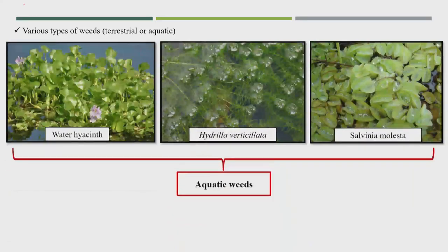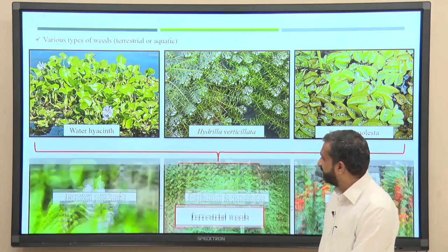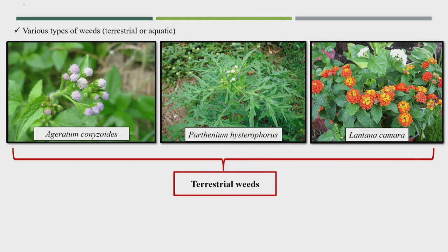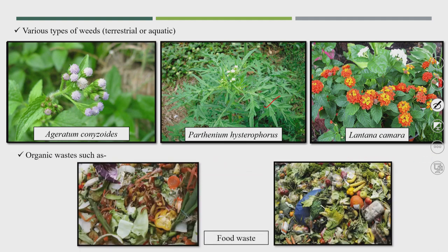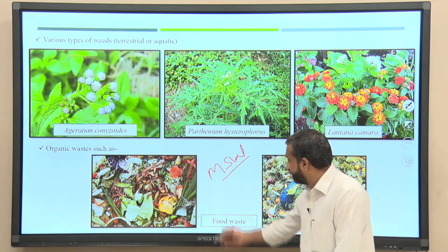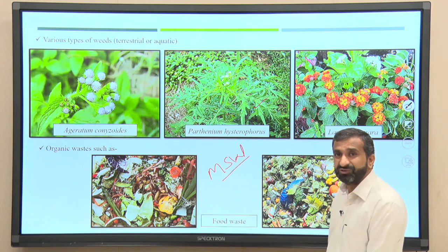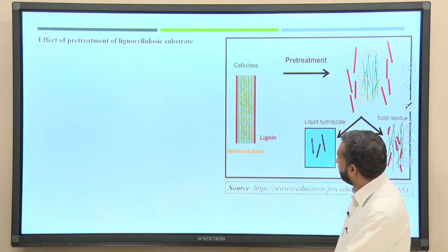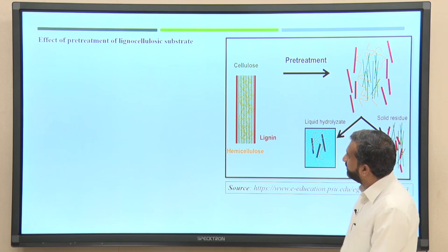Various types of aquatic weeds — like water hyacinth, hydrilla, and salvinia — are also lignocellulosic biomass useful for biogas production. Terrestrial weeds and organic waste such as food waste from municipal solid waste (MSW) are also possible substrates. Now, what is the effect of pre-treatment on lignocellulosic substrates?